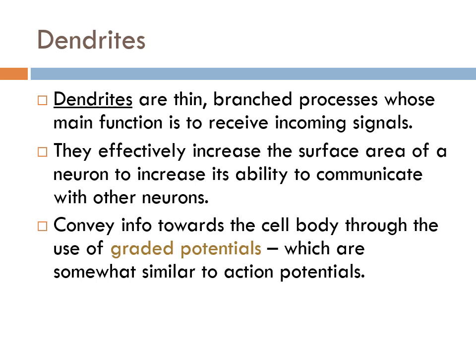Now we're going to look at the specific parts that neurons have in common that are unique to neurons. The first one is dendrites — thin branched processes whose main function is to receive signals from other incoming neurons. They effectively increase the surface area of a neuron because they're so branched and spread out, which increases the neuron's ability to communicate with other neurons, allowing it to receive signals from hundreds of other neurons. As a result of the incoming signal, they convey that information towards the cell body — the soma — through the use of graded potentials.